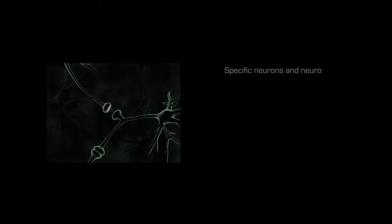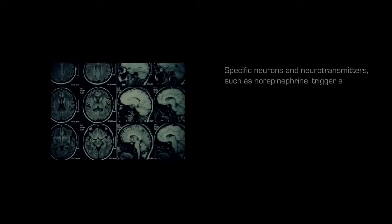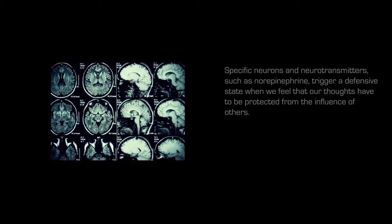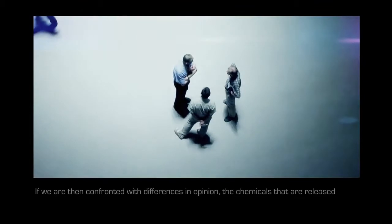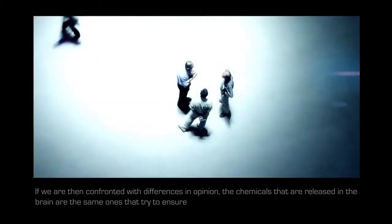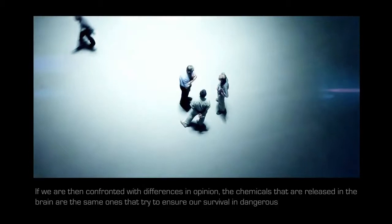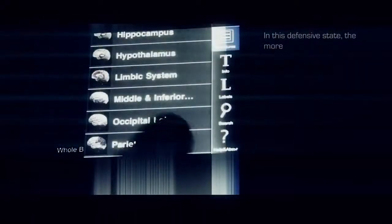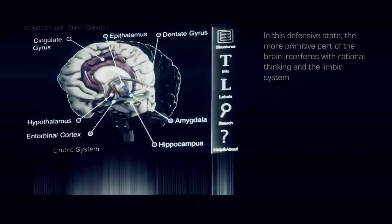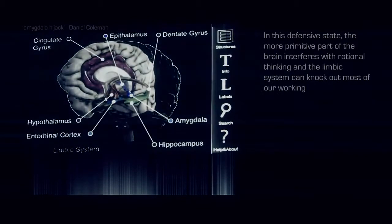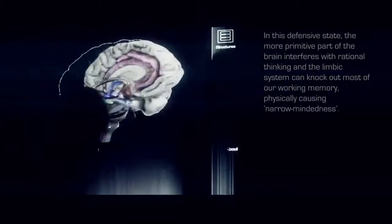Specific neurons and neurotransmitters, such as norepinephrine, trigger a defensive state when we feel that our thoughts have to be protected from the influence of others. If we are then confronted with differences in opinion, the chemicals that are released in the brain are the same ones that try to ensure our survival in dangerous situations. In this defensive state, the more primitive part of the brain interferes with rational thinking and the limbic system can knock out most of our working memory, physically causing narrow-mindedness.